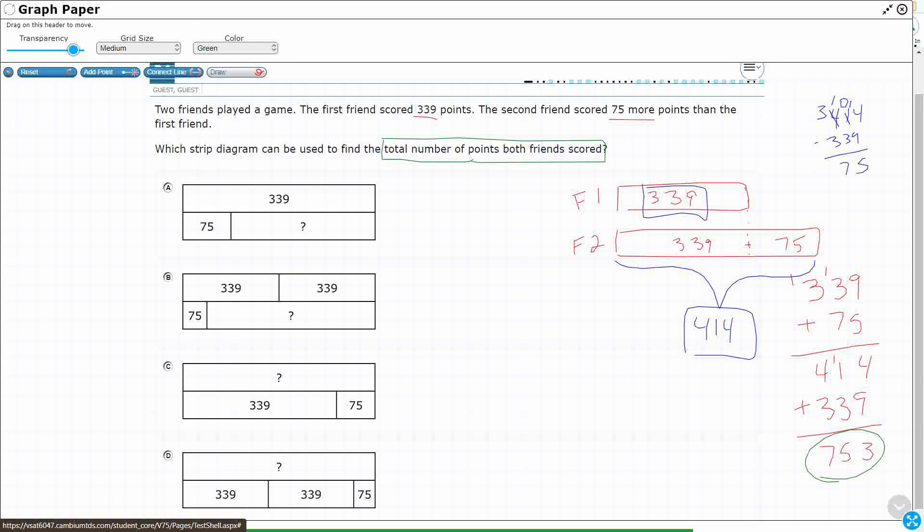Okay, so now we can use that to try to solve these. All right, so does it make sense? Let's look at A. Since I know that I'm looking for the total number of points both friends scored, that's my question mark. I'm just going to put 753 in for each of these. Does it make sense that I can make a part, part, whole with 339 being the whole and the two parts being 75 and 753? Well, that makes zero sense because 753 is much larger than 339. See, once we find that 753, this problem becomes kind of easy.